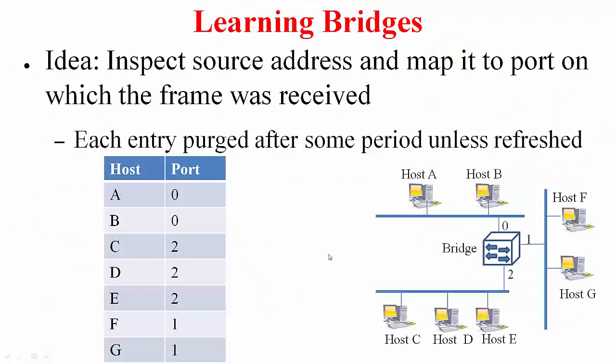Here is the idea. It is a very simple idea but a very clever idea. What you do is you inspect the source address of frames that are passing through you and map that particular address to the port on which the frame was received. For example, when host A sent a packet to host B, this packet is going to be received on this particular bridge on port 0. In which case, this bridge is now going to put an entry that says host A is on port 0. Note that you are looking at the source address here, not the destination address. So to build the forwarding table, you are using the source address but to forward a particular packet, you will use this table to forward the packet.